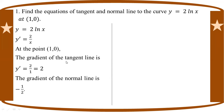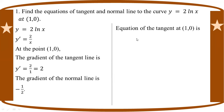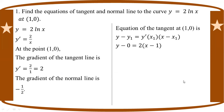The equation of the tangent line at (1, 0): y minus 0 equals 2 times x minus 1, giving y equals 2x minus 2.